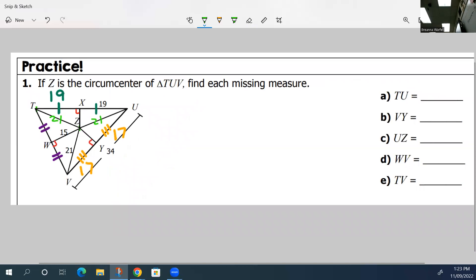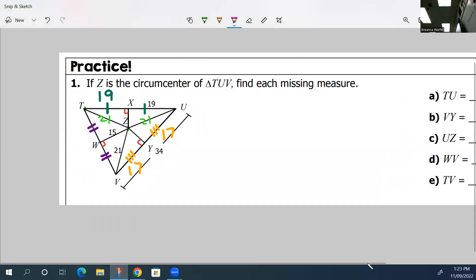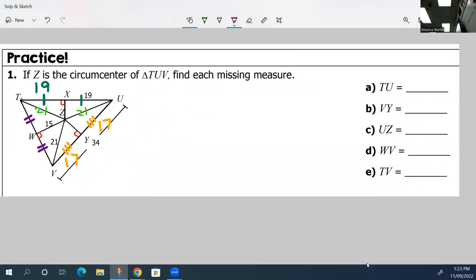We need to figure out some of these measurements. First is TU. Let's see. Have we solved for TU yet? T to U is this side right here. And we know it's 19 and 19.